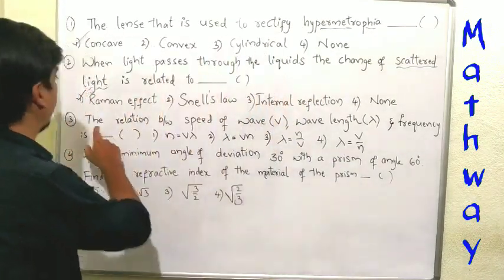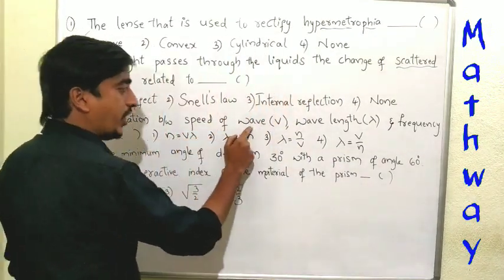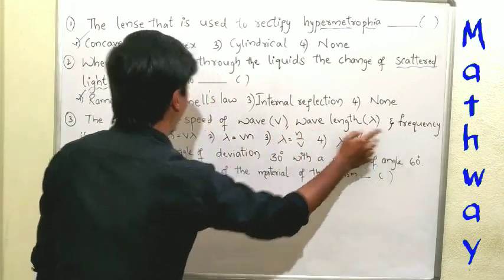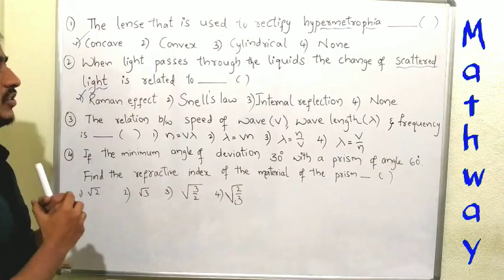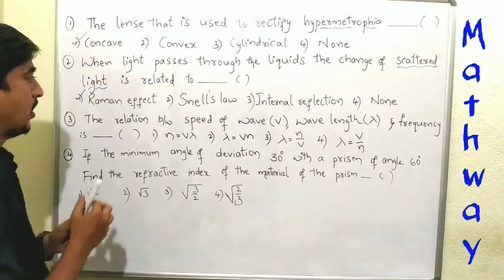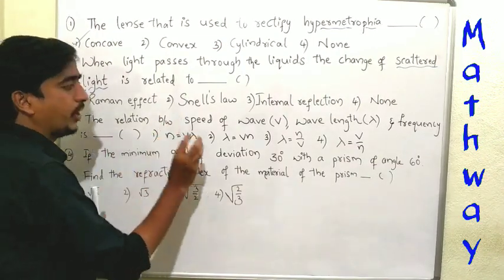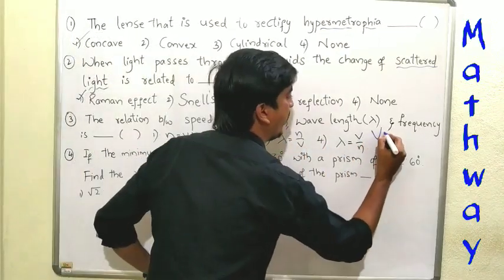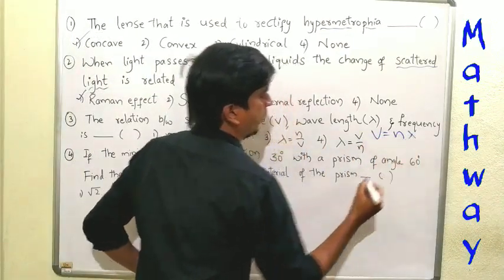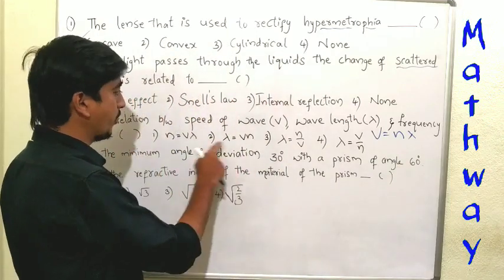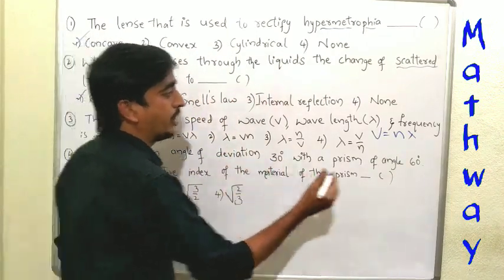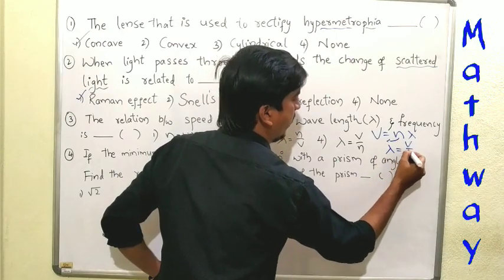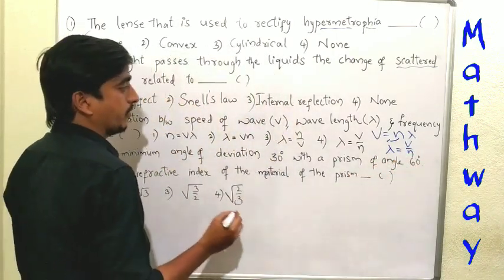Third question: the relation between the speed of wave V, wavelength lambda, and frequency. We will denote the relation between the speed of wave, wavelength and frequency. So V equal to N lambda. Lambda is equal to V by N. So option four is correct.